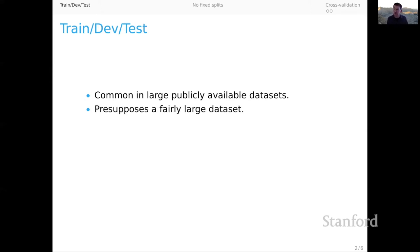It does presuppose that you have a fairly large data set because after all, right from the get go, you are setting aside a whole lot of examples in the dev and test splits that you can't use at all to train your systems. So even though your system might benefit from those examples, you can't use them in that context. They can be used only for evaluations. You're just giving up a lot of potentially useful examples.